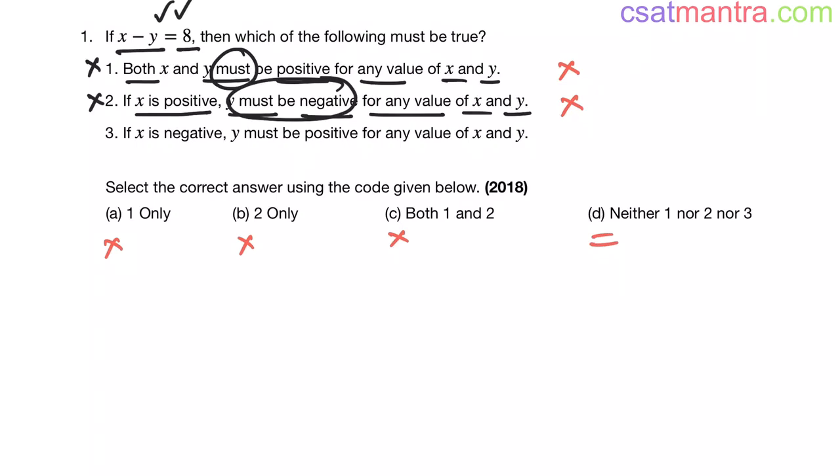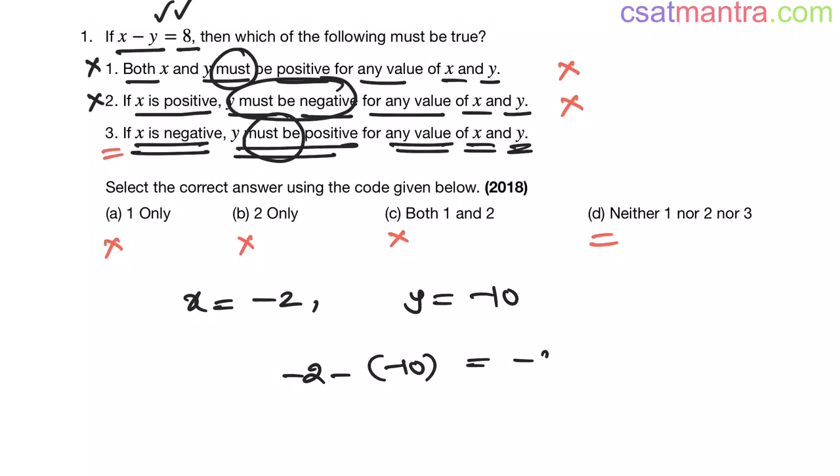Now let's check if conclusion three is valid or not. If x is negative, y must be positive for any value of x and y. I am taking x as negative, that is minus 2. Now I have to disprove this must be part, my friends. y must be positive. Let's check with negative values of y. So in this case, y is minus 10. x minus y equals minus 2 minus minus 10, which equals 8.